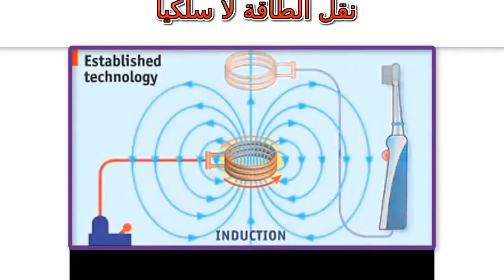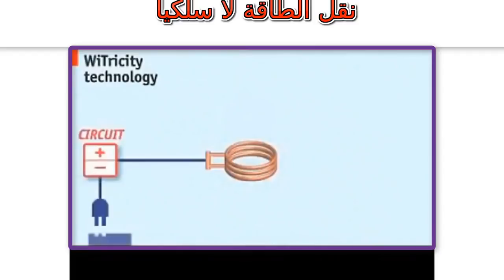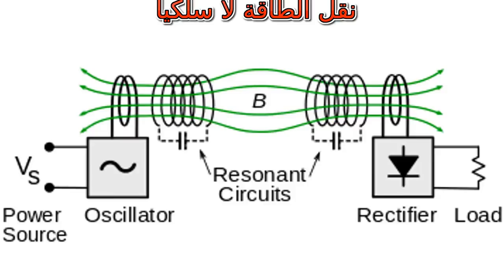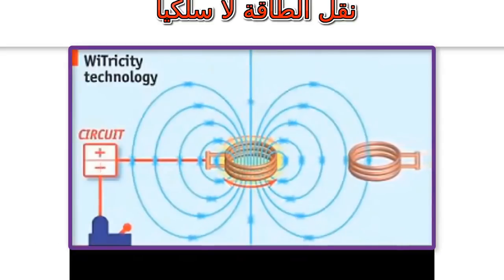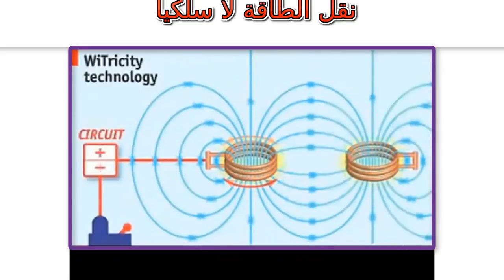The distance at which the energy, or power, can be transferred is increased if the transmitter and receiver coils are resonating at the same frequency. This resonant frequency refers to the frequency at which an object naturally vibrates or rings, much like the way a tuning fork rings at a particular frequency and can achieve its maximum amplitude.